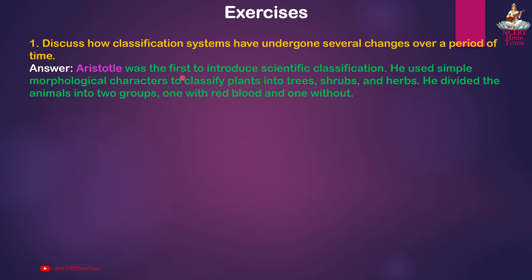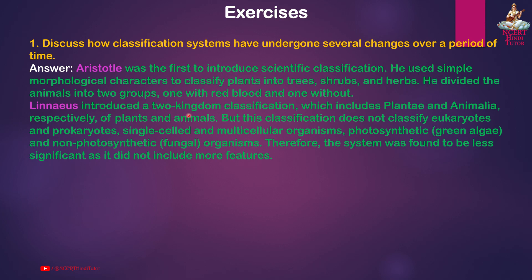Answer: Aristotle was the first to introduce scientific classification. He used simple morphological characters to classify plants into trees, shrubs, and herbs, and divided animals into two groups — one with red blood and one without. Linnaeus introduced the two-kingdom classification, which includes Plantae and Animalia, but this classification does not distinguish eukaryotes from prokaryotes.